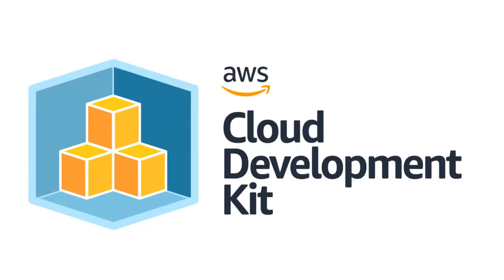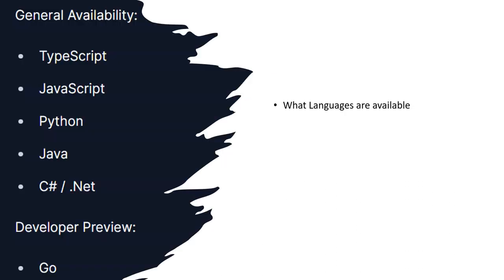The AWS Cloud Development Kit is an open source software development framework to define your cloud application resources using familiar programming languages. AWS CDK currently offers five languages in general availability and one in developer preview: TypeScript, JavaScript, Python, Java, and C#/.NET, with Golang in developer preview. The first programming language AWS CDK supported is TypeScript, and all other languages are ported into TypeScript for execution.